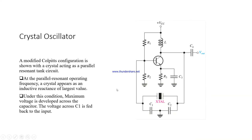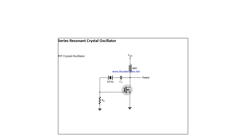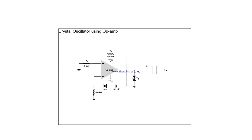This is named a crystal oscillator. At the parallel resonant operating frequency, the crystal appears as an inductive reactance of the largest value, and under this condition maximum voltage is developed across the capacitor. The voltage across capacitor C1 is fed back to the input for feedback operation. Crystal oscillators can be designed using a transistor or an op-amp. This is how crystal oscillators are used in electronic systems for signal generation.